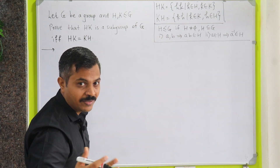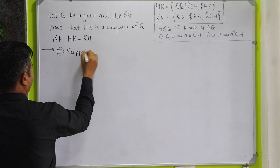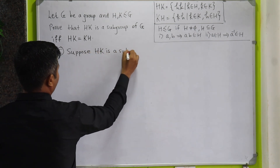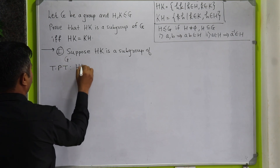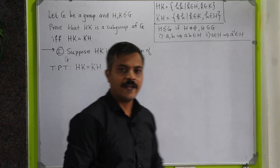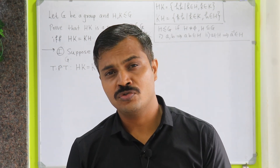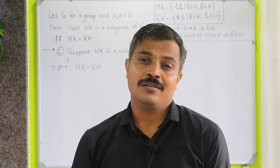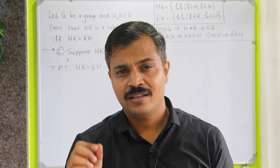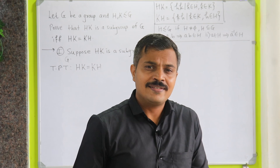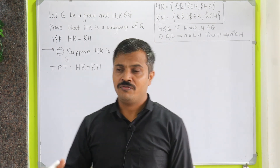We will use the two-step subgroup test. In part one, we assume that HK is a subgroup of G and we will prove that HK equals KH. Since HK and KH are both sets, to show they are equal we show they are subsets of each other — just as we show two sets A and B are equal by showing A is a subset of B and B is a subset of A. So first we will prove HK is a subset of KH.